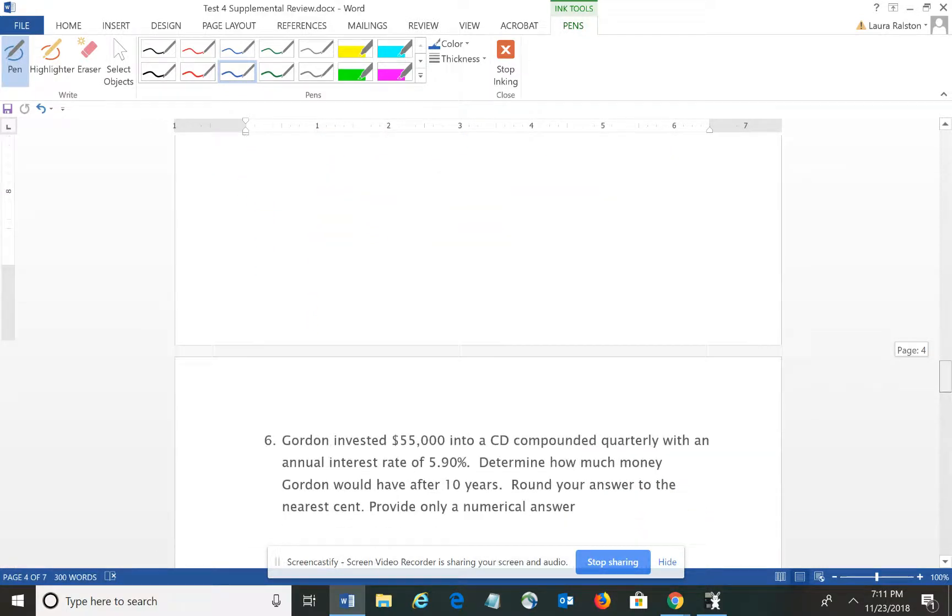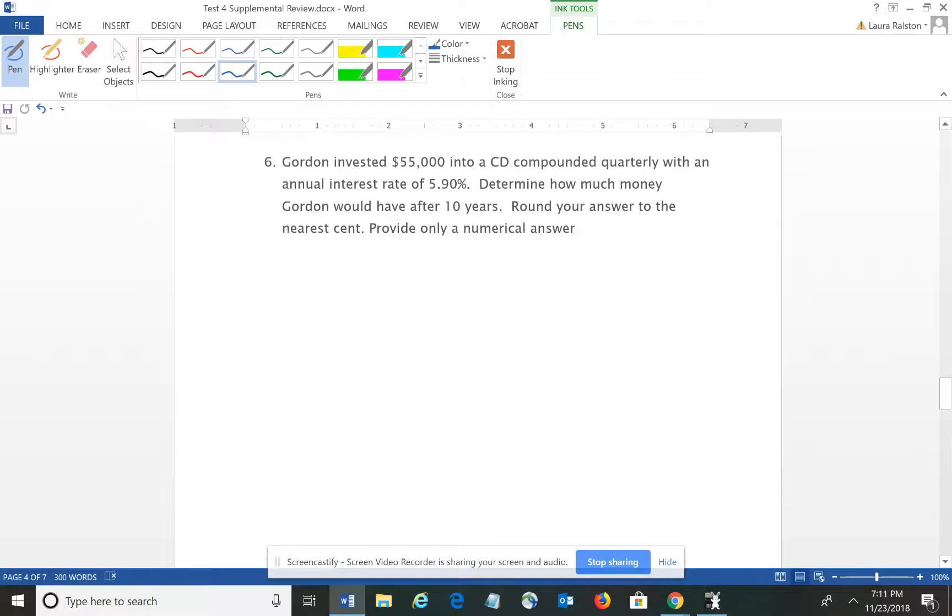All right, question number 6. We're getting into some word problems here. It says Gordon invested $55,000 into a CD compounded quarterly with an annual interest rate of 5.90%. Determine how much money Gordon would have after 10 years. Round your answer to the nearest cent, and all the instructions on the test say provide only a numerical answer, which means they do not want you to put the dollar sign. Please be sure to follow the instructions.